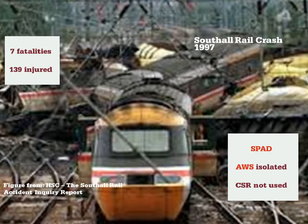We then had another accident in 1997 — the Southall rail crash — again another SPAD. In this case the AWS was actually isolated and the CSR was not used. There were seven fatalities and 139 people injured.